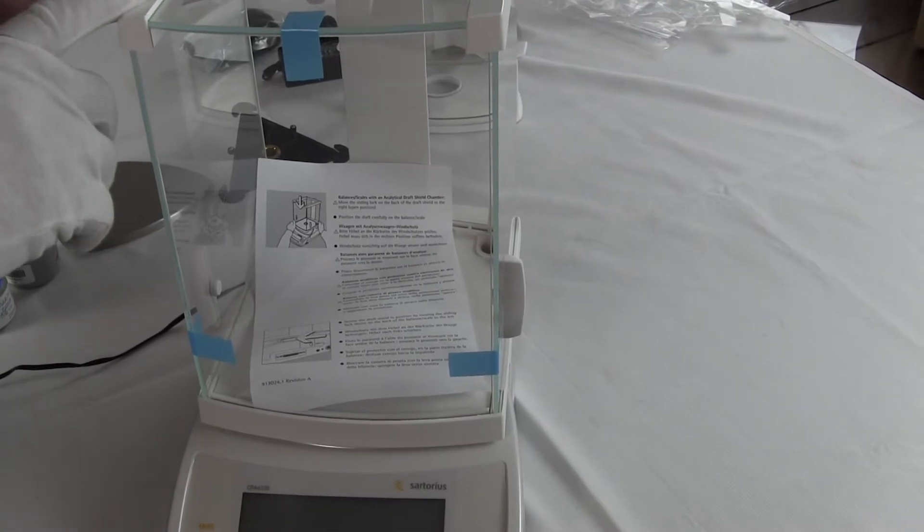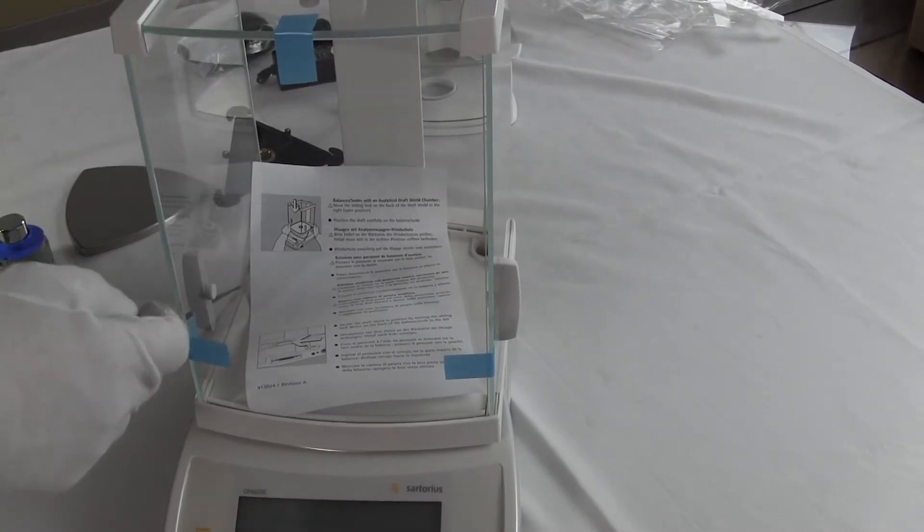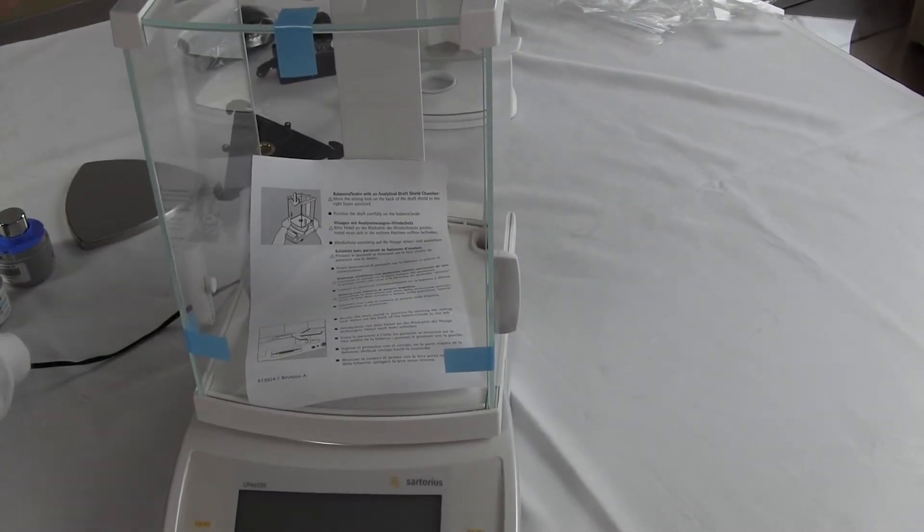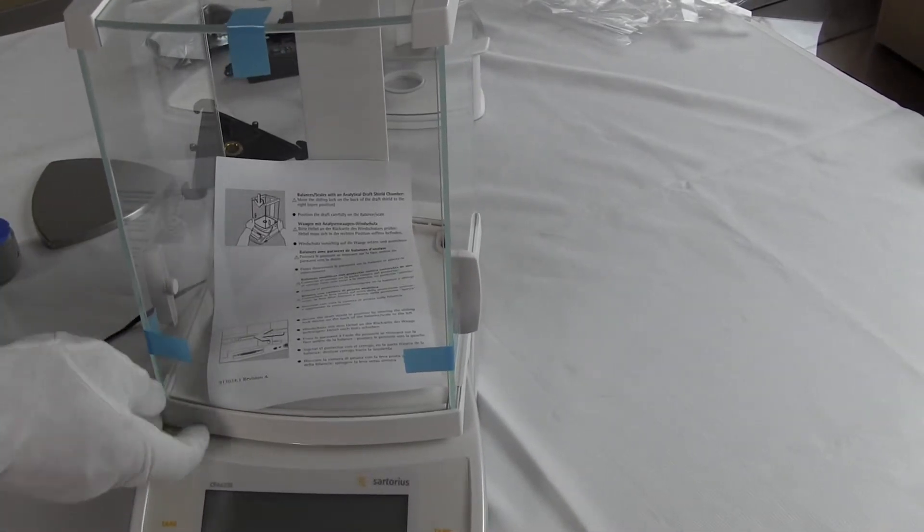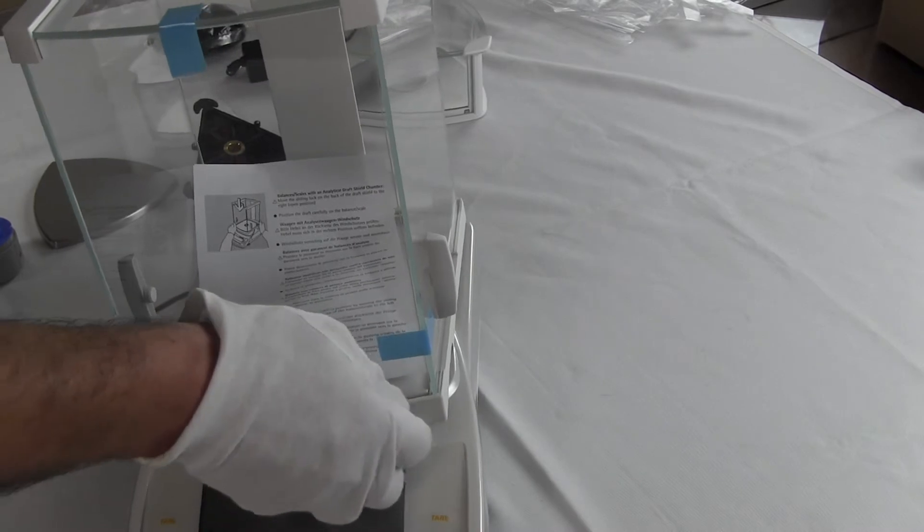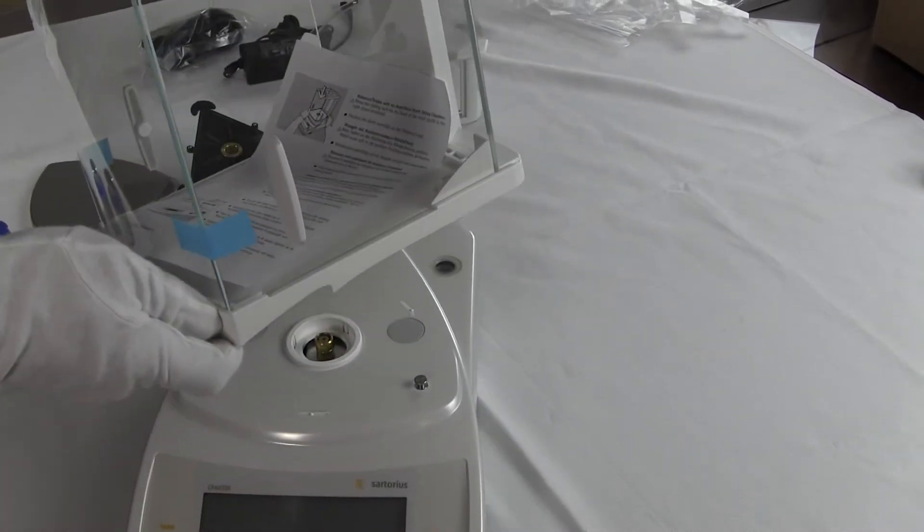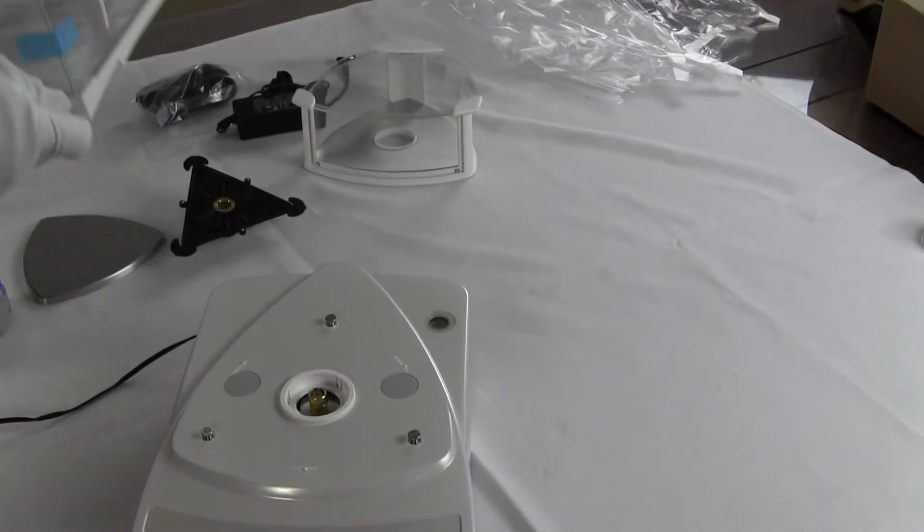We do sell this. It's in the optional accessories. It's about $600. It's pretty expensive. It has anti-static coating on it. You're paying a premium for it because Sartorius really builds the best. That's the glass draft shield. That's an option if you'd like.